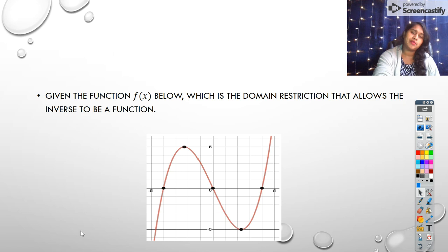So anywhere, either from negative infinity to whatever this value is, approximately negative two and a half, and then from negative two and a half to approximately positive two and a half, and then from positive two and a half to infinity, any of those intervals would be a domain restriction that allows for an inverse.